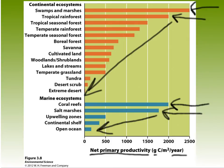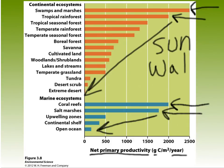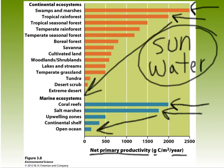Depending on these numbers, we can determine that swamps, marshes, tropical rainforests, and coral reefs can sustain and support abundant life — lots of biodiversity. Deserts and open oceans, not quite as much. It's all dependent on two factors: sunlight — solar energy — and water abundance. These two factors are going to be the contributing factors to their overall net primary productivity. That is ecosystem productivity, and I'll be posting other videos on various topics in Chapter 3.